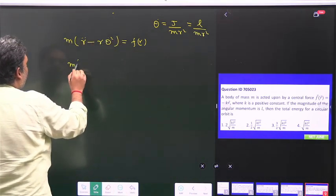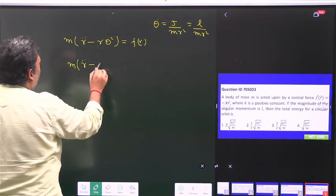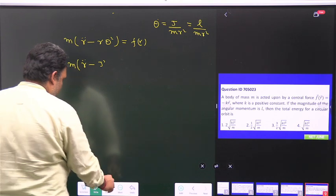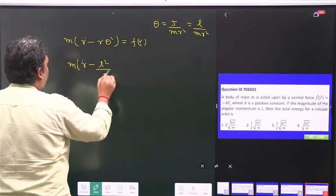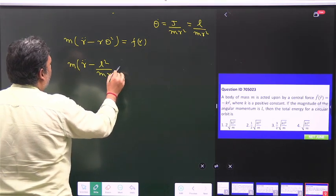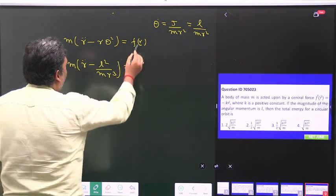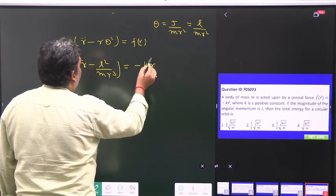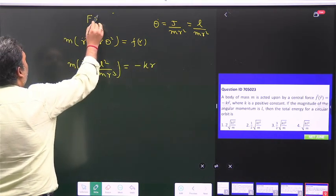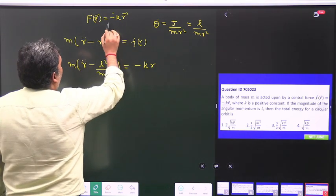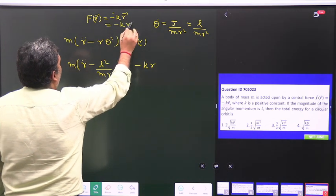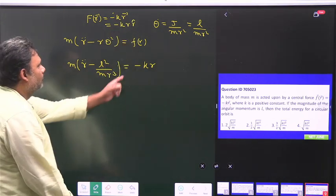So this equation can be written as m r double dot minus l square upon m r cube, and this value is equal to minus kr. In spherical polar coordinates this r can be written as r r cap, so this is your minus kr.